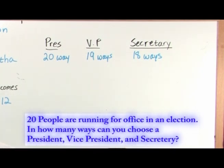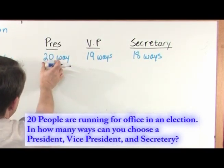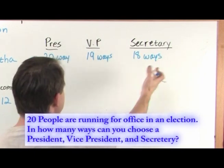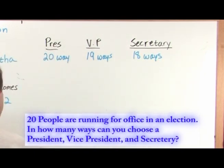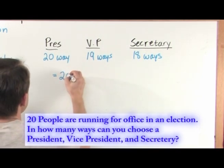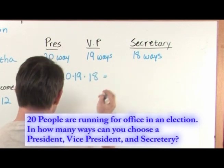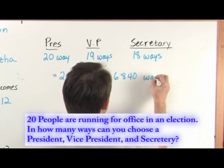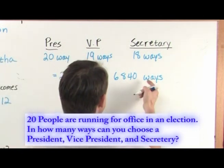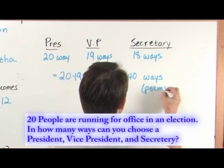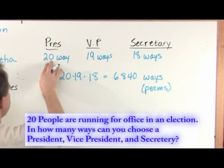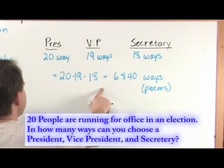The fundamental counting principle says: event one can happen M1 ways — here that's 20 ways; event two can happen M2 ways — here that's 19 ways; event three can happen M3 ways — here that's 18 ways. So the number of ways the whole thing can happen is 20 times 19 times 18, which equals 6,840 ways. And since the order does matter in an election, these are called permutations — 6,840 permutations. You multiply the choices together and you get the answer.